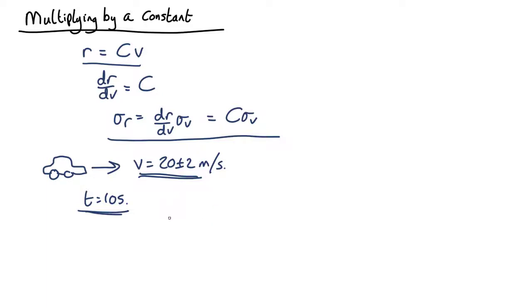Now we know, ever since primary school, that the distance traveled is equal to the time times the velocity. In this case, time is a constant; it doesn't have an uncertainty.